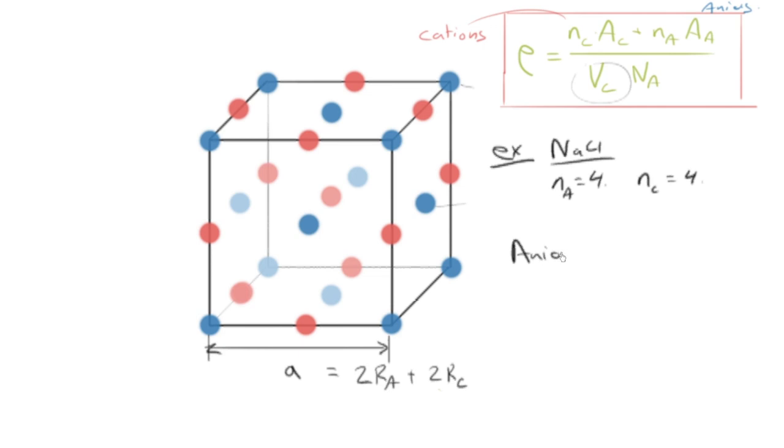The anions do not touch along face diagonals. They do not touch on face diagonals, as they do for FCC.